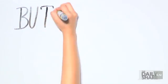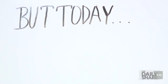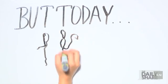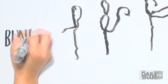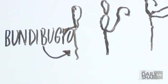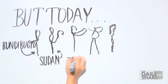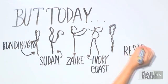But this wasn't the same. Today, we now know there are at least five different strands of Ebola, all named after their areas of origin: Bundibugyo, which is in Uganda, Sudan, Zaire, Ivory Coast and Reston.